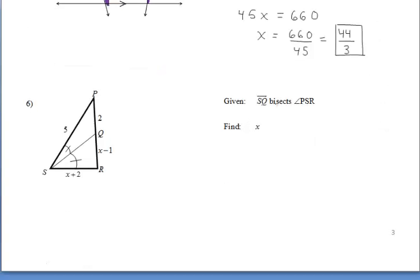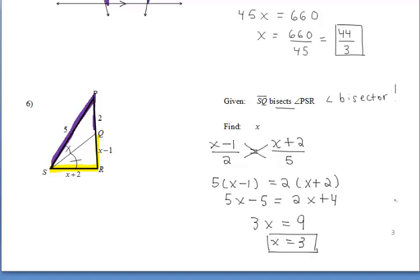And finally, for number 6, we have an angle that is being bisected. So we can use the angle bisector theorem. And you could set up this proportion here. Don't forget that when you cross-multiply, you're distributing. So when you do that, you get that X has a value of 3.